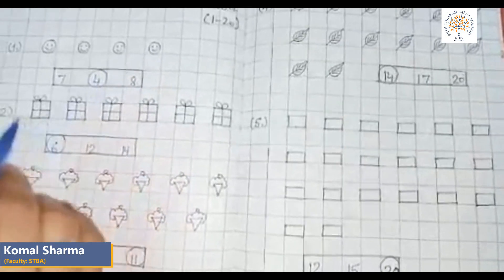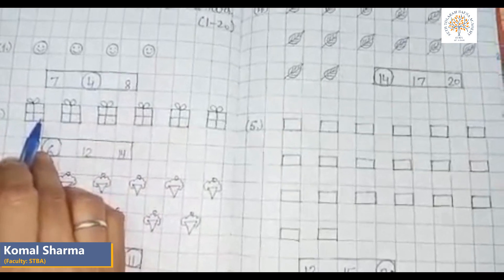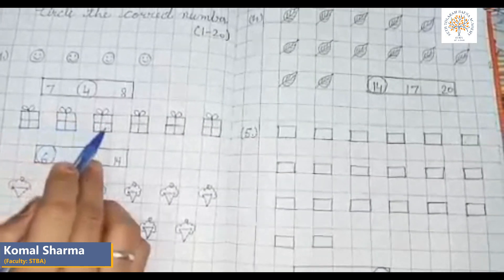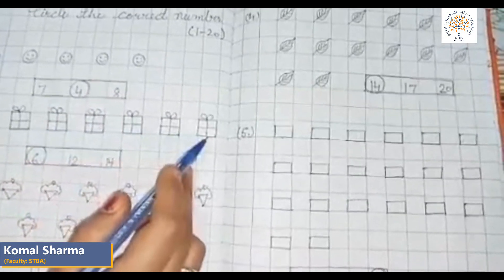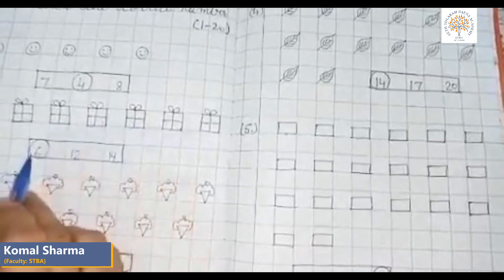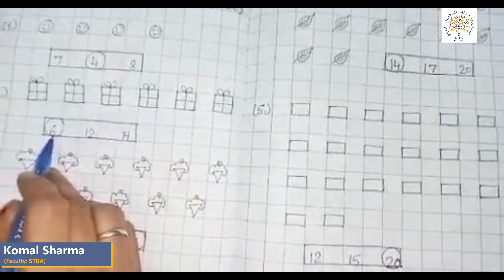Now we count boxes. How many boxes are there? One, two, three, four, five, six. There are six boxes. We will circle the number six.